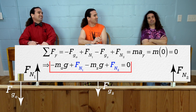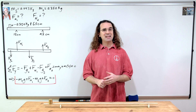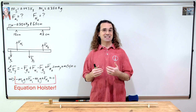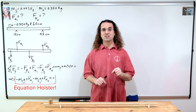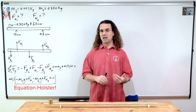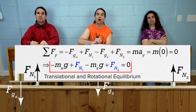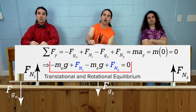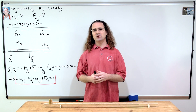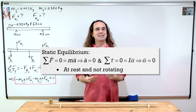Equation holster! That is correct. We cannot currently do anything more with the net force equation, so we put it in our equation holster for when we need it later. Notice the meter stick is not moving — in fact, it is also not rotating. This means it has zero angular velocity and zero angular acceleration. It is in rotational equilibrium. The meter stick is not only in translational equilibrium, it is also in rotational equilibrium. This is a special case where the object is at rest, is not rotating, and is in what we call static equilibrium.